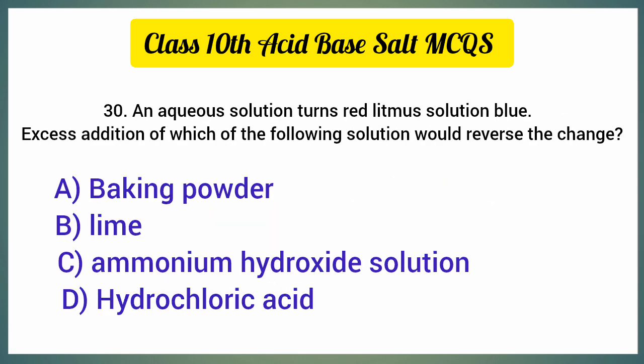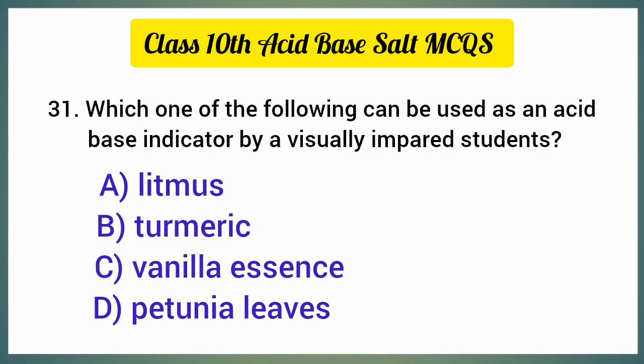An aqueous solution turns red litmus solution blue; excess addition of which of the following solution would reverse the change? The correct option is option D, hydrochloric acid. Which one of the following can be used as an acid-base indicator by a visually impaired student? The correct option is option C, vanilla essence.